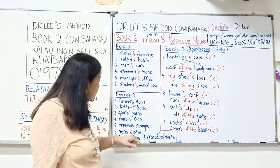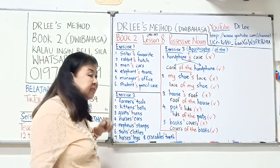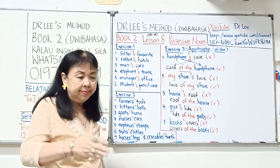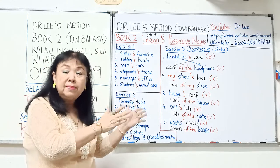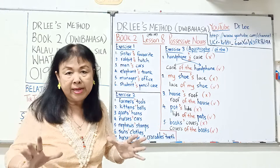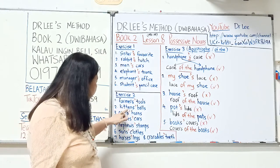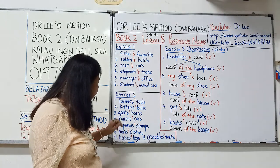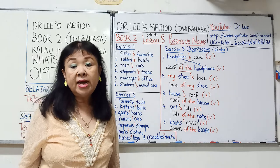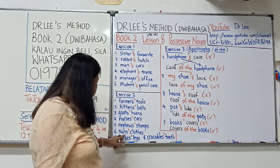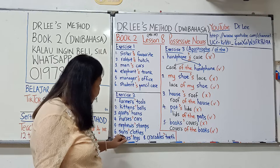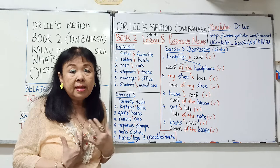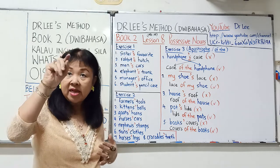Exercise 2. Kita boleh lihat S baru apostrophe — kalau kita hanya tulis apostrophe, maksudnya orang atau binatang di depan itu dalam plural, iaitu banyak. Jadi banyak petani, banyak kucing, banyak anak kucing, banyak kambing, banyak jururawat, banyak nephews — anak saudara lelaki. Memang sudah ada S, tapi untuk menunjukkan kepunyaan, kita hanya tulis apostrophe.